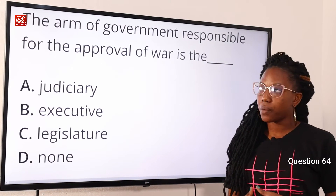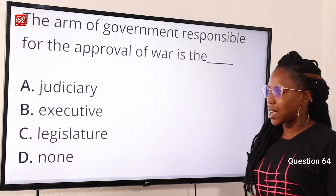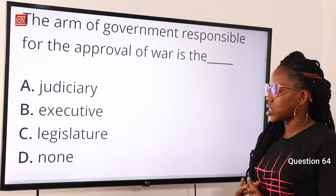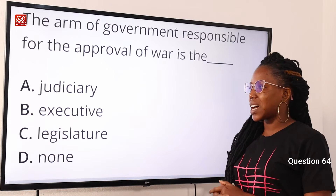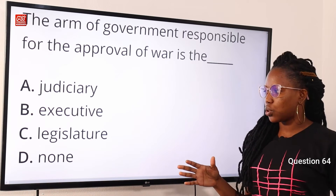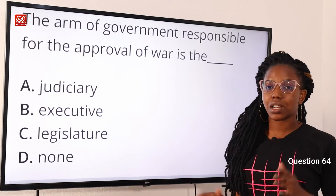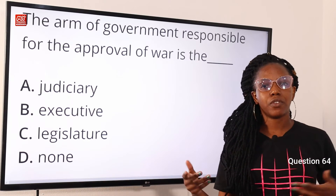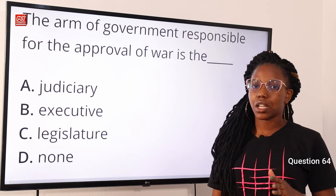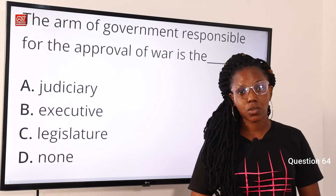Question 64: the arm of government responsible for the approval of war is the — option A, judiciary; option B, executive; option C, legislature; option D, none. The answer is option C, legislature. They approve the declaration of war. While the executive declares the war, fights back invasion, and maintains peace, it is the legislature that approves the declaration. Option C is the correct answer.